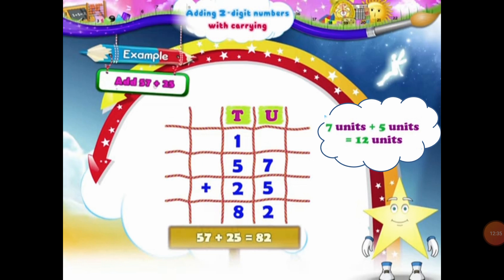So we will place 2 units under the units column and 1 ten will be carried over in the 10s column. Now moving on to the 10s column, let's add the digits in the 10s column. In the 10s column, we have 1 ten, 5 tens and 2 tens. When we add 1 ten, 5 tens and 2 tens, that will be equal to 8 tens. So the answer of 57 plus 25 will be equal to 82.